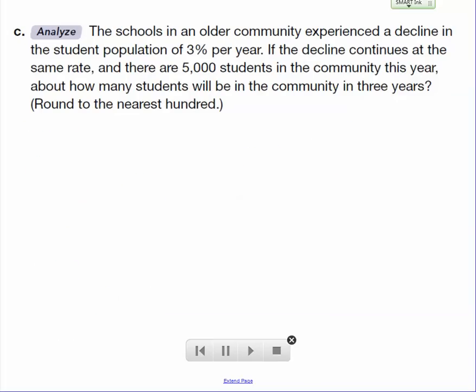The schools in an older community experienced a decline in the student population of 3% per year. If the decline continues at the same rate, and there are 5,000 students in the community this year, how many students will be in the community in 3 years? So they're asked to round to the nearest 100.